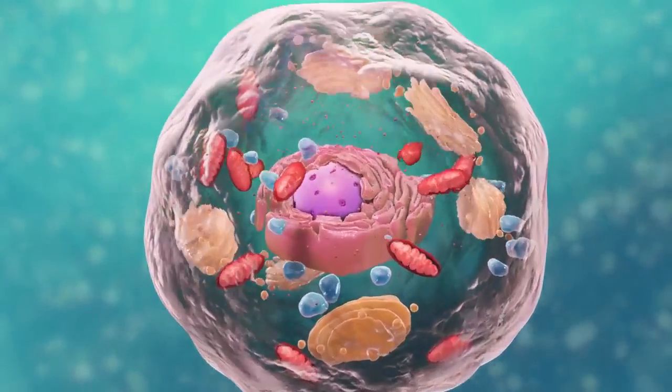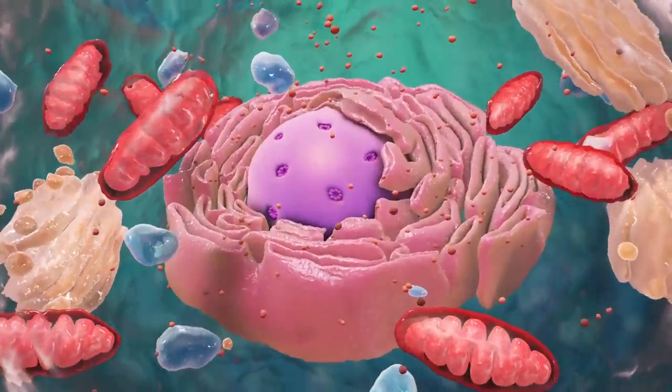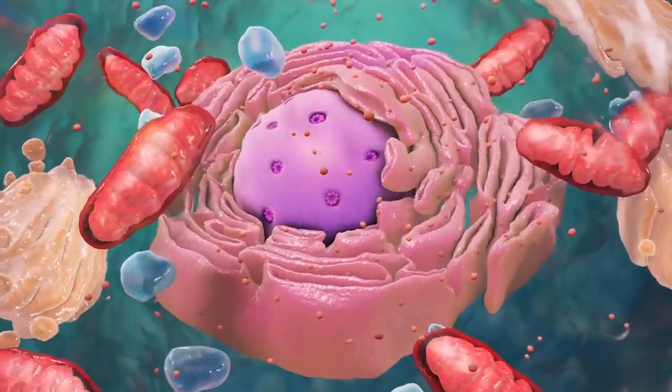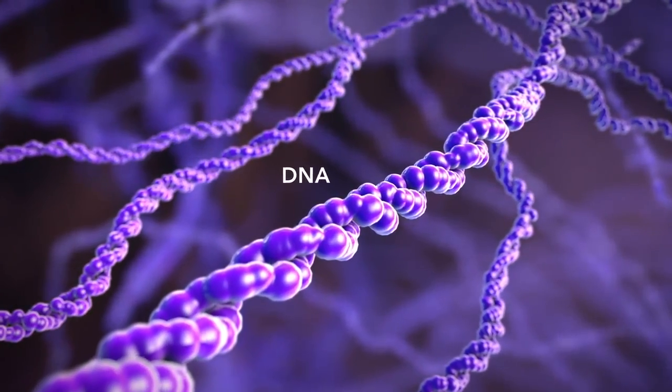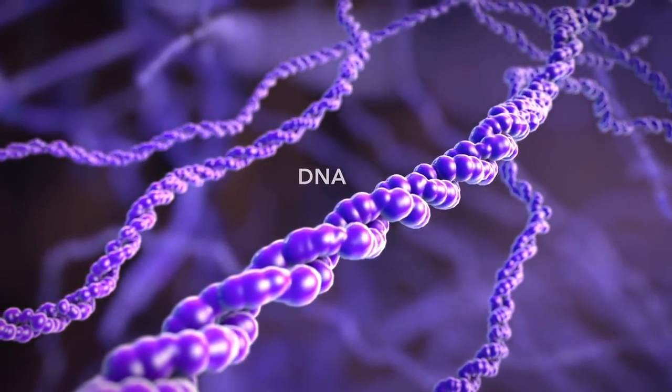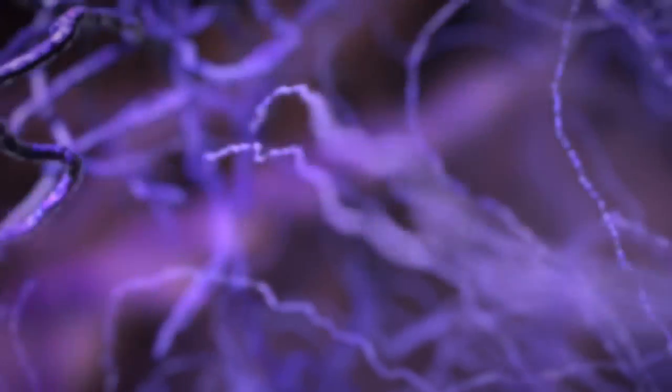Let's start with the nucleus, the control center of the cell. The nucleus contains DNA or genetic material. DNA dictates what the cell is going to do and how it's going to do it.